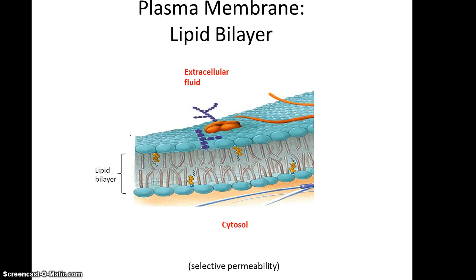The plasma membrane is made up of what's called the lipid bilayer. It is composed of two similar-looking structures called phospholipids, where the phosphates are charged on the outside, and on the inside are the fatty acid chains, which are not charged. The fatty acid chains are hydrophobic — they fear water — so they interact with each other, while the phosphates are hydrophilic, or water-loving. So they're on the outside, adjacent to the extracellular fluid, which is water-based, or the cytosol inside the cell, which is also water-based.